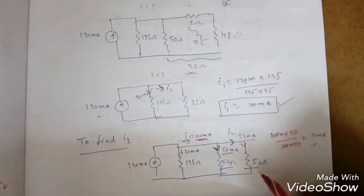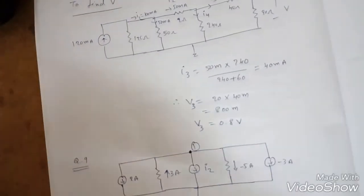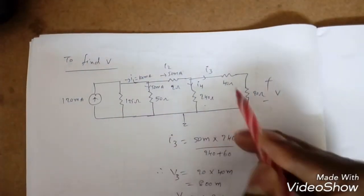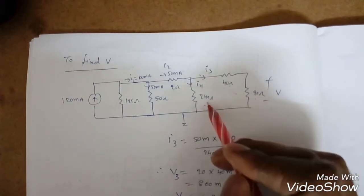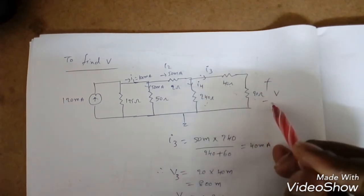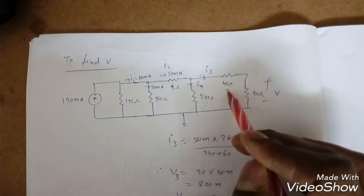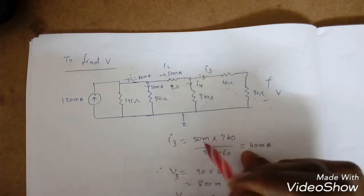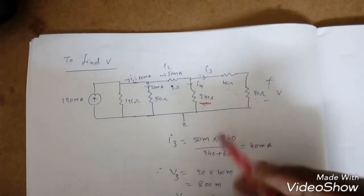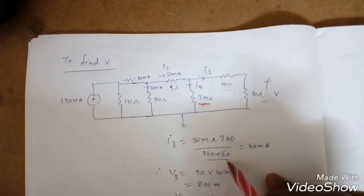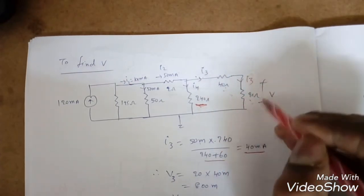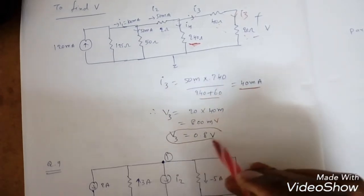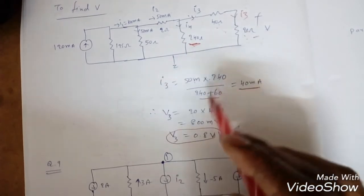To find I3, we decompose the 50-ohm equivalent back into 2 ohms, 40 ohms, 20 ohms, and 240 ohms. With 50 mA entering and two branches of 60 ohms and 240 ohms, applying current division: I3 = 50 mA × 240/(240 + 60) = 50 × 240/300 = 40 milliamperes. By Ohm's law, V3 = I3 × 20 = 40 mA × 20 = 800 millivolts = 0.8 volts.